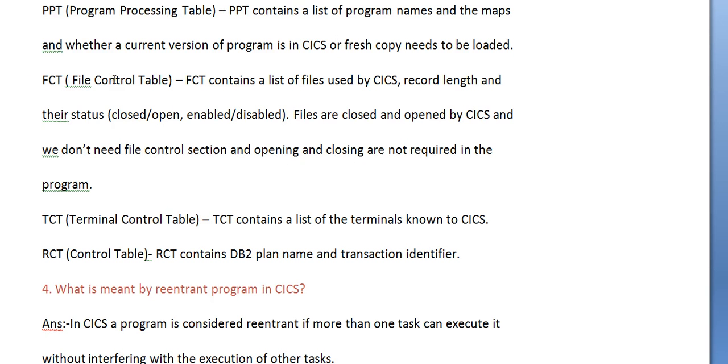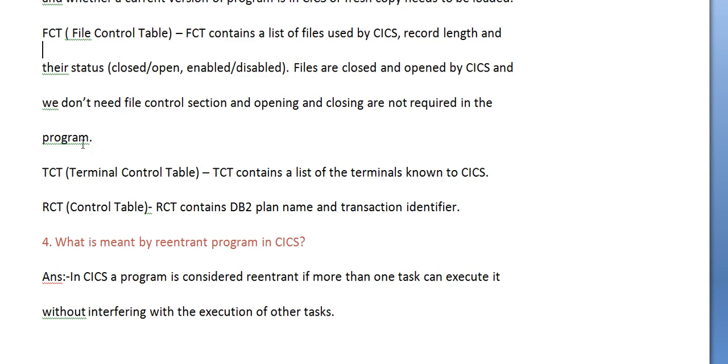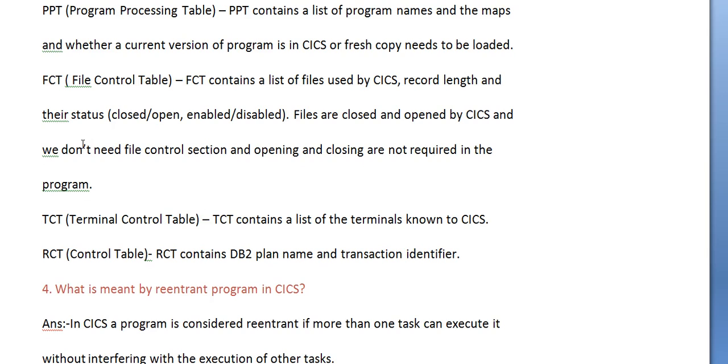FCT (File Control Table) contains a list of files used by CICS, record length, and their status whether closed, open, enabled or disabled. Files are closed and opened by CICS and we don't need file control section. Opening and closing are not required in the program.